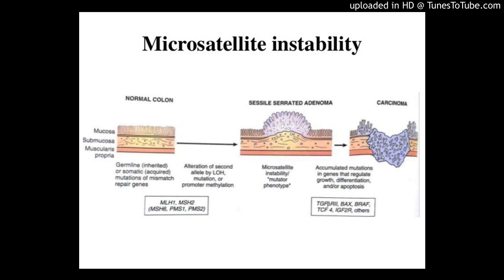Conclusion. We conclude higher prevalence of MSI-H tumors in Stage 2 as compared to Stage 3 CRC, which was demonstrated slightly higher in our study compared to published literature. MSI-H tumors tend to occur with high frequency in younger population, with right-sided colonic tumors, with histopathology characterized by mucinous subtype and high prevalence of tumor-infiltrating lymphocytes.